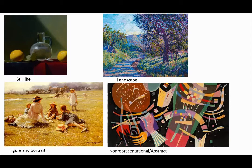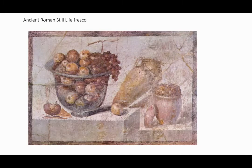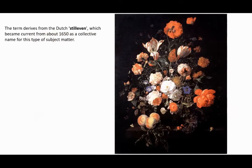Still life painting goes back to the ancient Greek and Roman artists and may have started much earlier. Greek and Roman artists painted still lifes as a symbolic way of offering food to gods and goddesses. The term still life comes from the Dutch 'stilleven,' and Dutch still lifes of the 17th century are considered to be among the best ever painted.